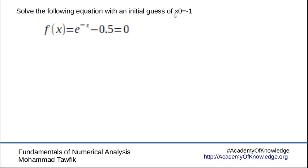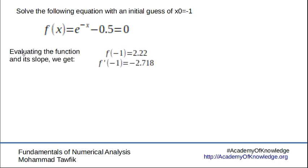Anyway, if we start with an initial guess of minus one and try to apply the Newton-Raphson method, let's say here we have f of minus one will be 2.22, while f prime, the slope at minus one, is minus 2.7.